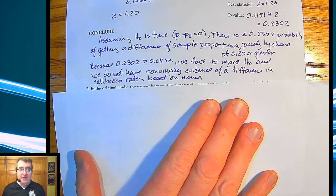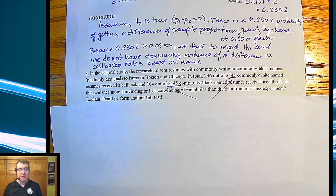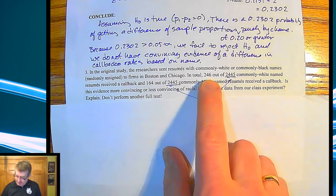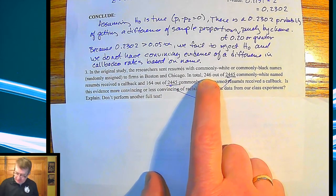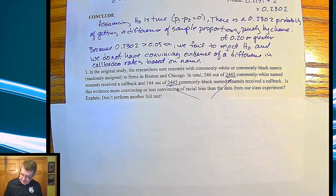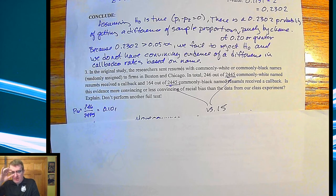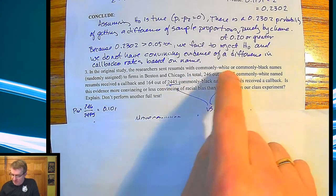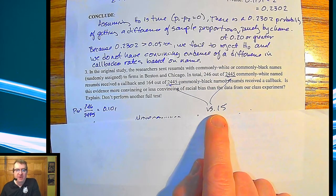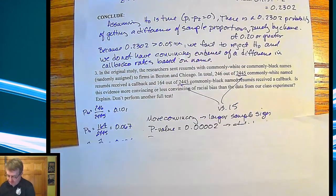So anyway, now let's talk about the original study here. The original study, the researchers sent resumes to commonly white or comment with commonly white or black names randomly assigned to firms in both Boston and Chicago. Here are the numbers of what they sent out. So the white names got callbacks 246 out of 2445, 164 out of 2445. Now I say that because again, we're asking, is this more convincing evidence what we got? And I ended up commenting on this in the video one sideways. So hence my notes. These are much bigger than 15. So that's going to affect what? Standard deviation. So that's going to make our standard deviation even lower than possible, lower than before.